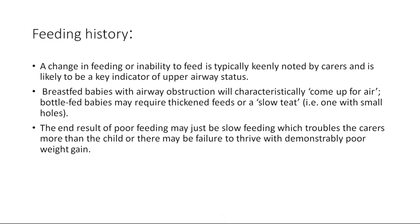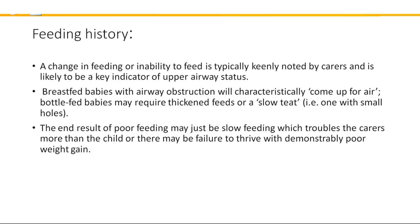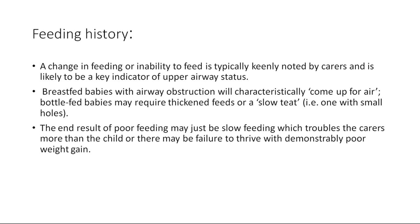Feeding history: a change in feeding or inability to feed is typically keenly noted by carers and is a key indicator of the upper airway status. Breastfed babies with airway obstruction will strictly need a feed break. Bottle-fed babies may require thickened feeds or a slow teat with small holes. The end result of poor feeding may be slow feeding or failure to thrive with remarkably poor weight gain. Because of the accessory muscles being engaged in airway obstruction, the child expends more effort to breathe, leaving less capacity for feeding.